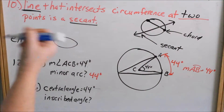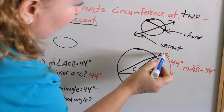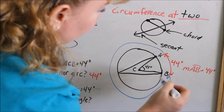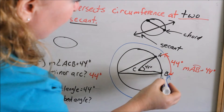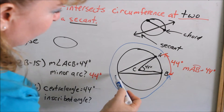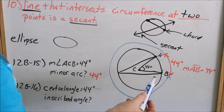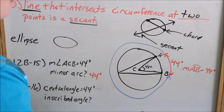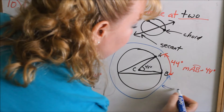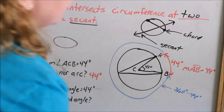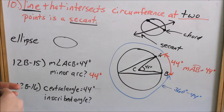The major arc would be everything else around the circle — going all the way around the other way. How many degrees are in a circle? 360. So the major arc would be 360 degrees minus 44 degrees. That's how you find the major arc.